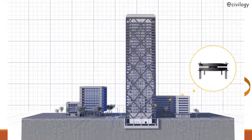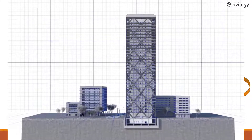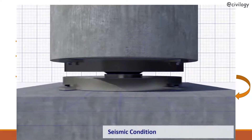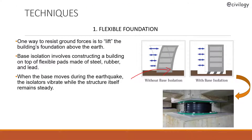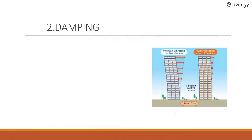The first method is flexible foundation, also known as base isolation. To resist ground forces, the building foundation is lifted above the earth. Base isolation involves constructing a building on top of flexible pads made of steel, rubber, and lead. When the base moves during an earthquake, the isolators vibrate while the structure itself remains steady, effectively absorbing seismic waves and preventing them from traveling throughout the building.